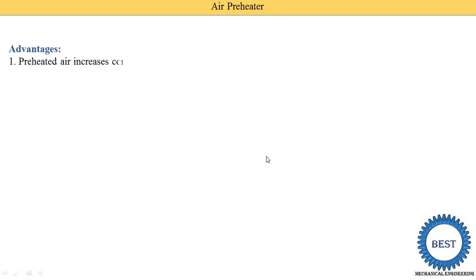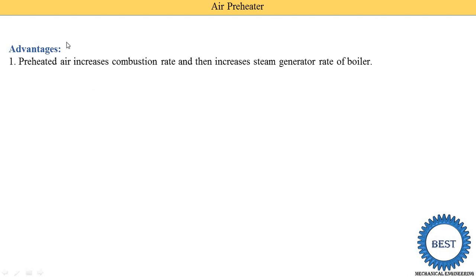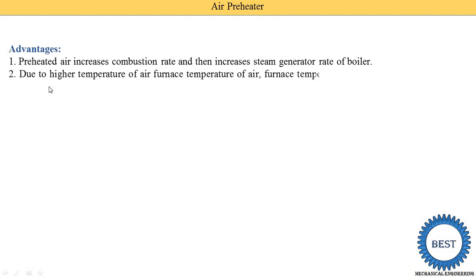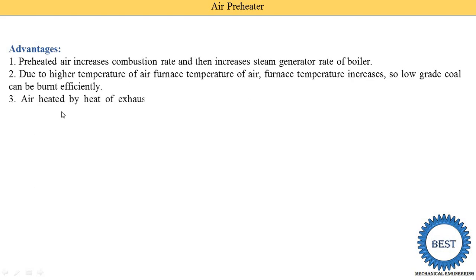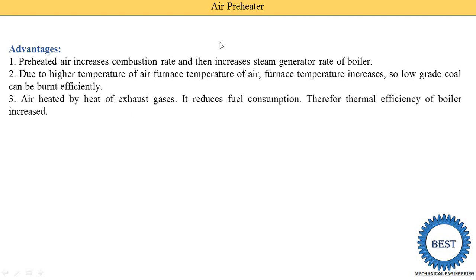The advantages of an air preheater: preheated air increases the combustion rate and increases the steam generation rate of the boiler. Due to the higher temperature of air, the furnace temperature is increased, so low-grade coal can be burned efficiently. The air is heated using the heat of exhaust gases, which reduces fuel consumption and therefore increases the thermal efficiency of the boiler.